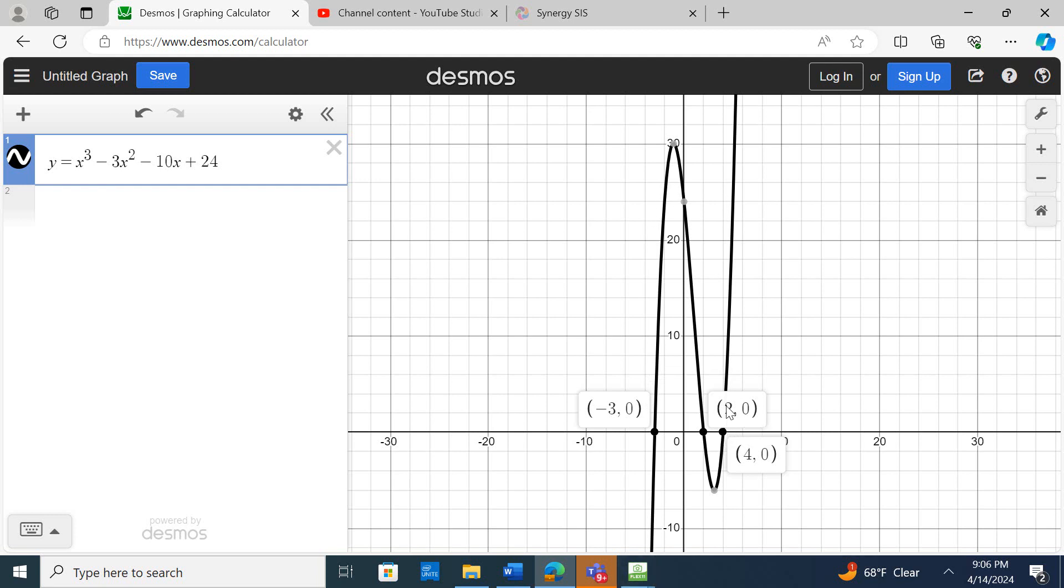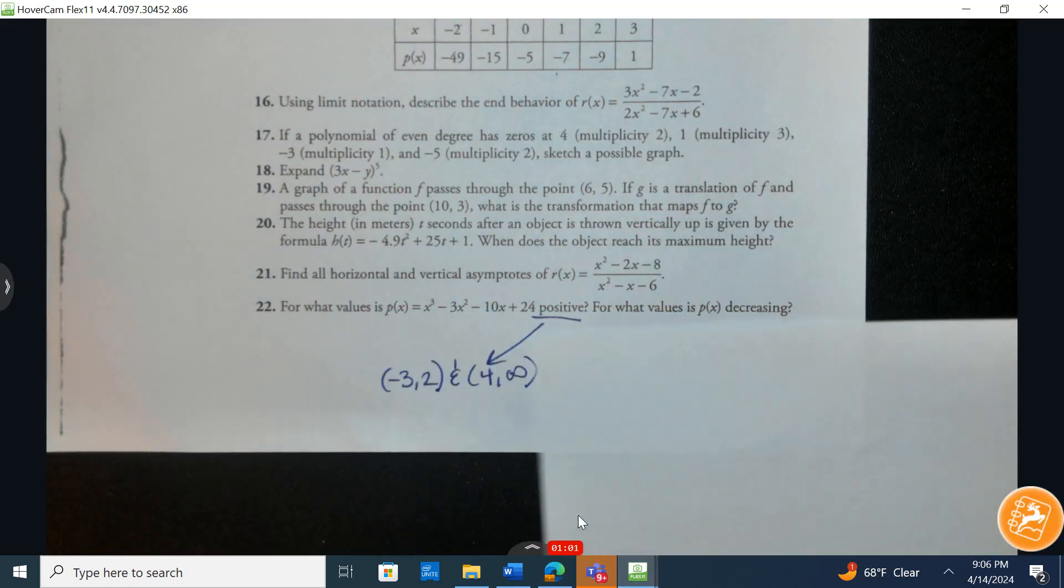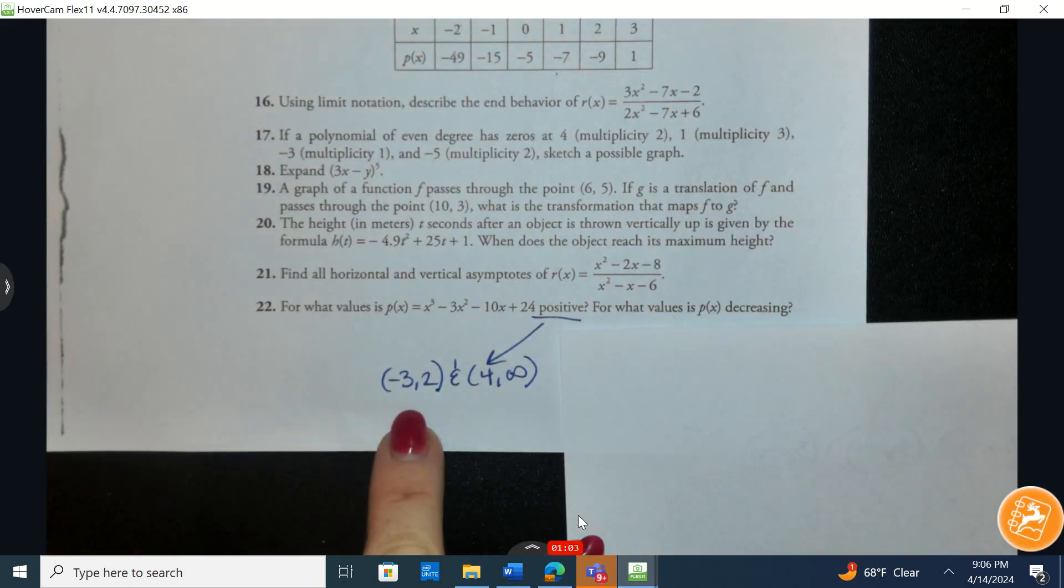And after it leaves four, it moves to the right. It's also positive. So if I come back here, I could illustrate those two intervals showing where p is positive.